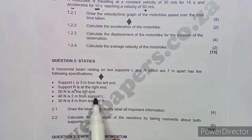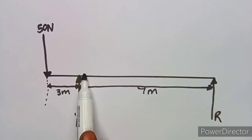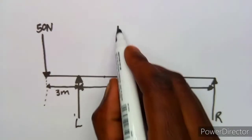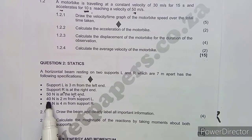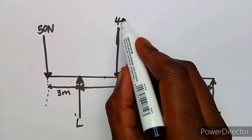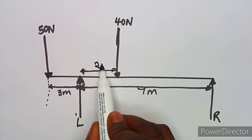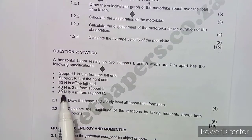The 40-newton force is two meters from support L. From L going toward R, we mark two meters, and at that point we draw a downward point load of 40 newtons, indicating the two-meter distance.